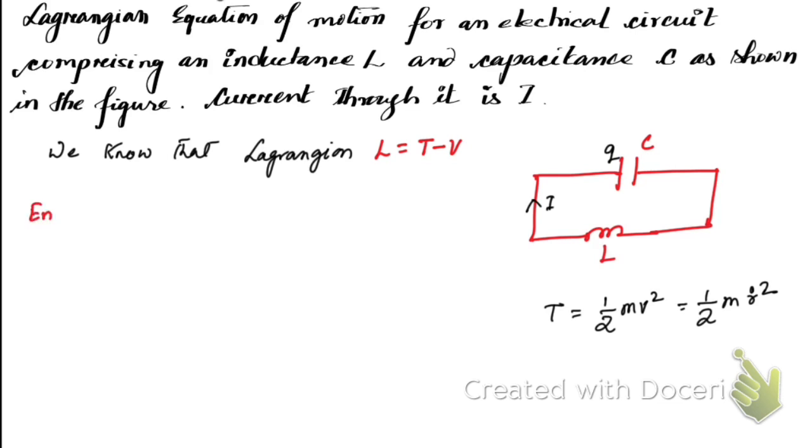Energy in the inductor—that is our T in this case—is given by (1/2)LI². We know that I = dQ/dt, the rate of charge flow, which can be written as Q̇. Therefore, T = (1/2)L(Q̇)².